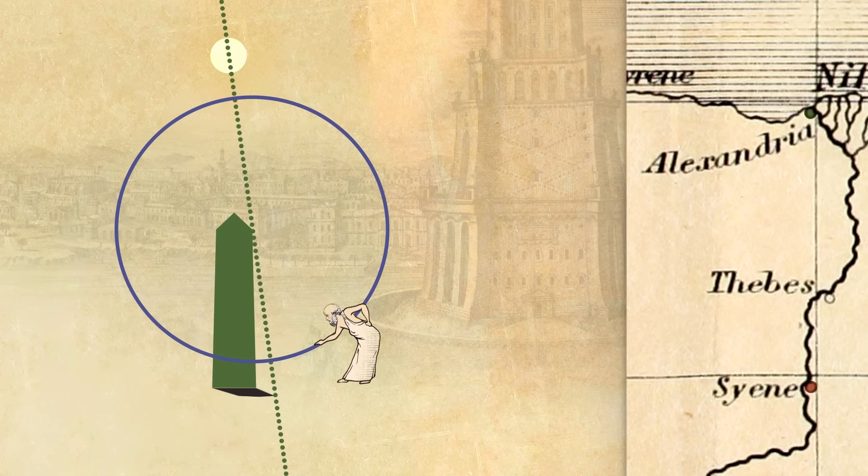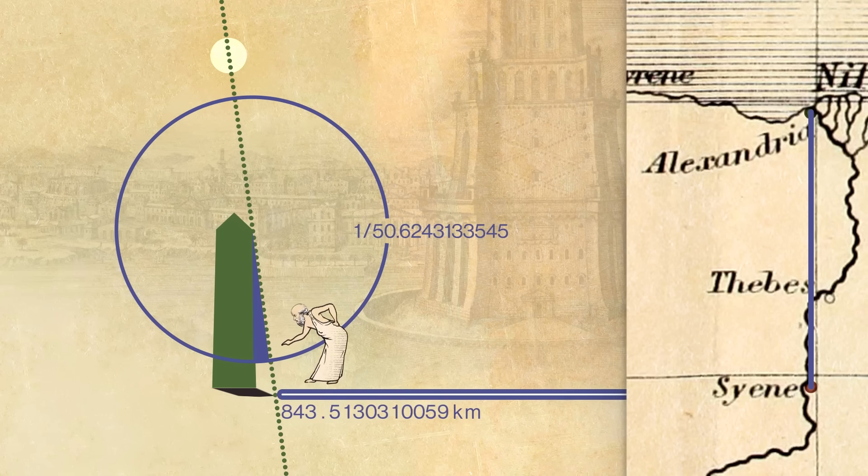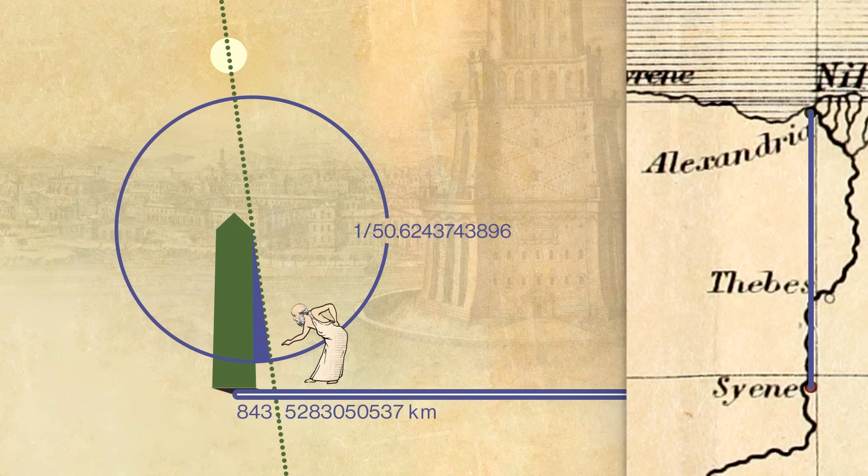Now, it would be nice to think that if only Eratosthenes had been able to make his measurements out to, say, 10 decimal places, he would have correctly arrived at the exact circumference. But that wouldn't have worked, no matter how precise he got, because Eratosthenes' calculation was based on the incorrect assumption that the Earth is a sphere.